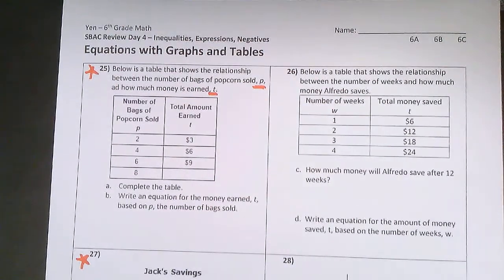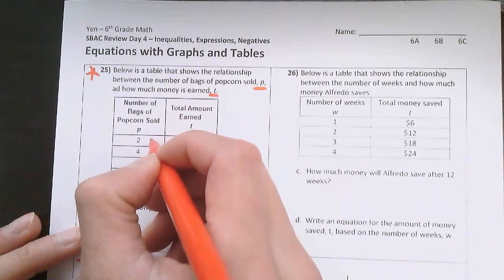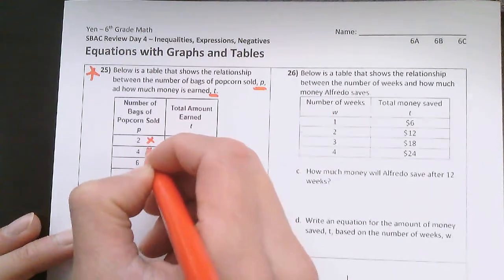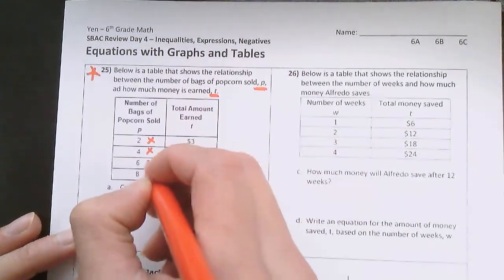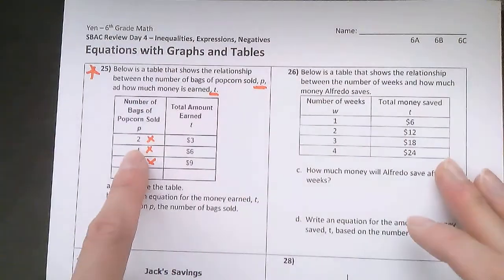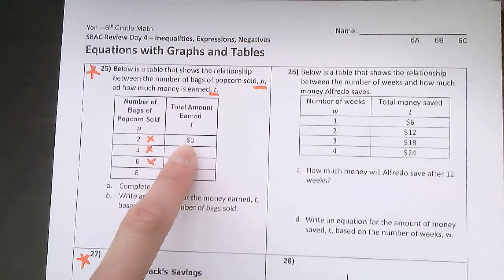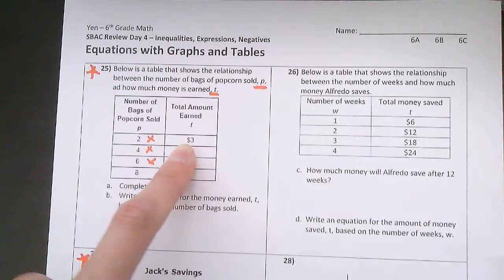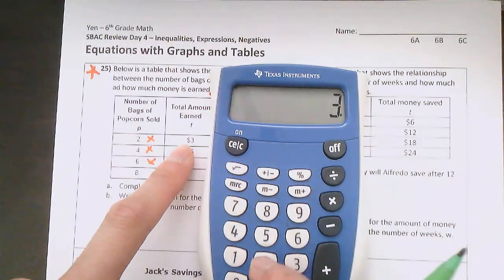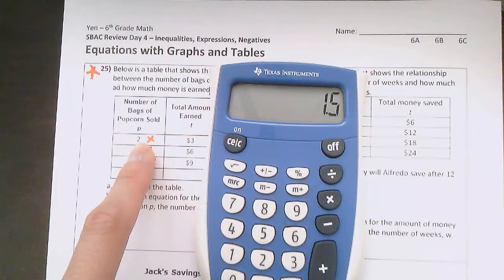The first thing I can do is what is the relationship to go from 2 to 3? 2 times what is going to get me to 3, 4 times what is going to get me to 6, 6 times what is going to get me to 9. This might seem tricky at first because I don't think I can multiply anything by 2 to get to 3. Well, actually you can, and you can use a calculator.